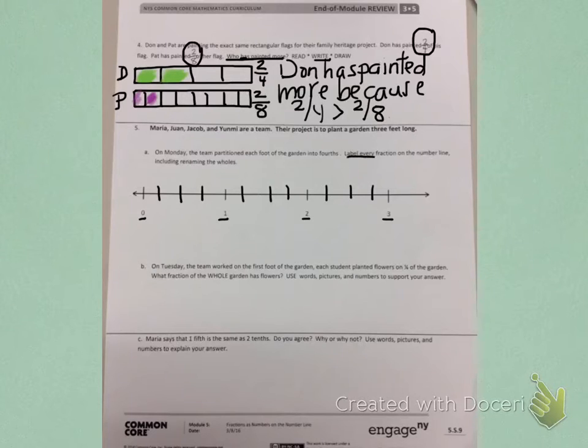Then, I need to label every fraction. So, I'm going to start with zero-fourths. I'm going to put a box around that since it's a whole number. One-fourth, two-fourths, three-fourths, four-fourths. Again, I'm going to put a box around that because it's a whole number.